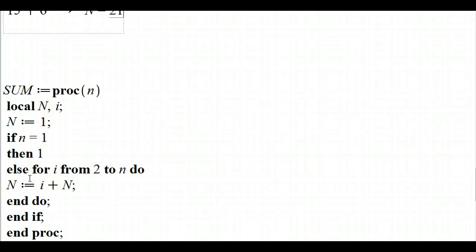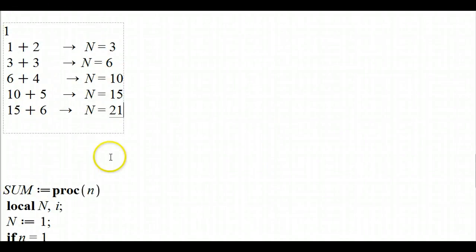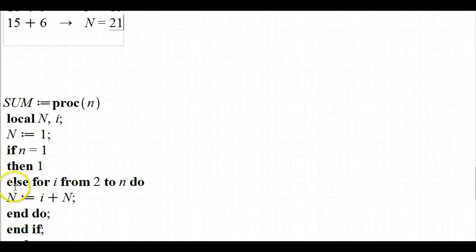So the way to type that in is else, what you're going to do is for i running from 2 to n, you're going to do the following. All right, now this looks a little bit strange because the n shows up on both sides, but you're going to